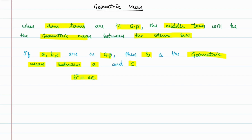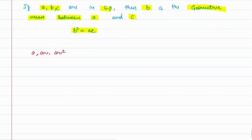Let's take a simple geometric progression with three terms such that the first term equals a and the common ratio equals r. Then the geometric progression will be a, a·r, a·r². So the first term is a, the second term b equals a·r, and the third term equals a·r².